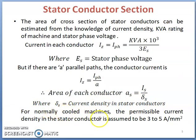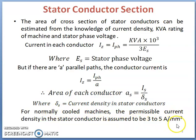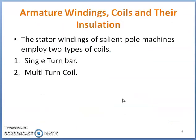For a normally cooled machine, the permissible current density in the stator conductor is assumed to be 3 to 5 ampere per mm squared. This is the procedure to calculate the cross-sectional area of stator conductors. We now move on to armature winding coils and their insulation.